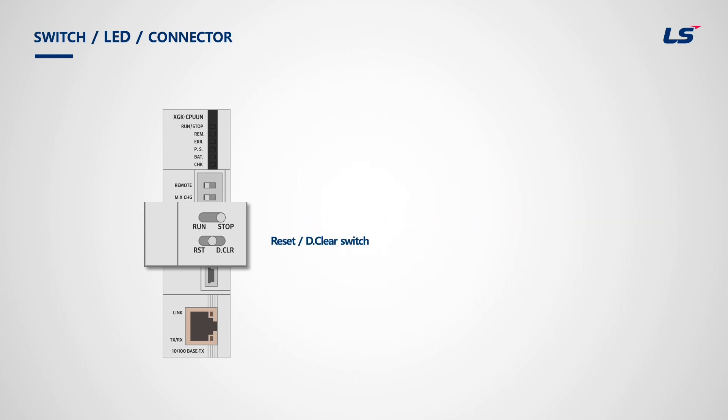The last switch is the reset-data-clear switch. You can enable or disable it in XG5000 basic parameter settings. When the reset switch is moved to the left and returned to center, it means reset. However, when the switch is moved to the left and kept for 3 seconds or more before returning to center, it means overall reset. The data-clear side works the same way.